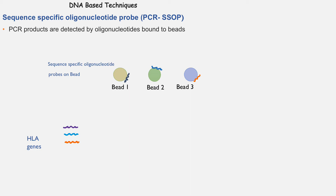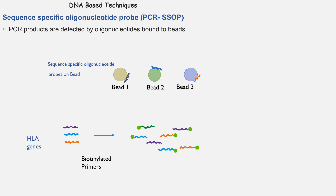There are different methods to perform this technique; however, most commonly these oligonucleotide probes are attached to different beads. To know which HLA alleles a person has, we first perform a PCR reaction using biotin-labeled primers, so each PCR product will have biotin attached to it. These amplified alleles will then bind to their corresponding oligonucleotide on beads. For example, if we have an allele with a corresponding oligonucleotide on bead 3, that allele will bind to its corresponding oligonucleotide on that bead.